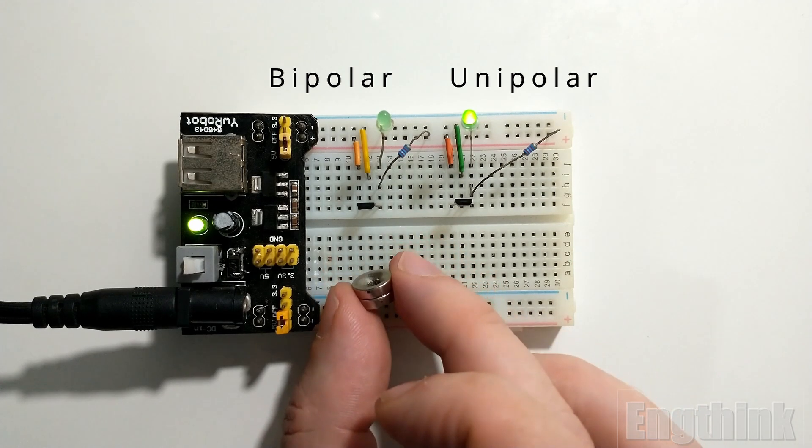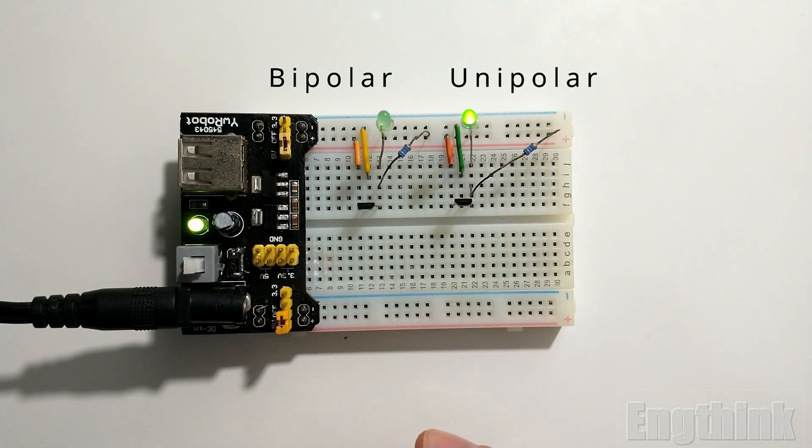However, when we remove the magnetic field by moving away the magnet, the LED doesn't turn on, differently from the unipolar mode. That's because the bipolar mode we are testing now has the characteristic of latching the output.